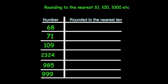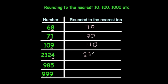We've been asked to round these to the nearest 10. Starting with 68: the units is 8, so we round up to 70. 71: the units is 1, so we round down to 70 as well. 109: the units is 9, so we round up to 110. 2,324: the units is 4, so we round down to 2,320.